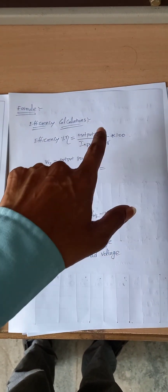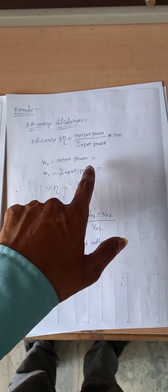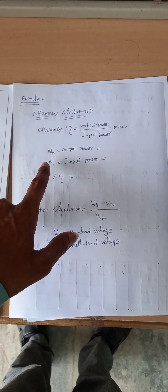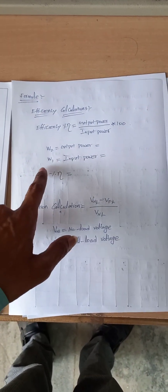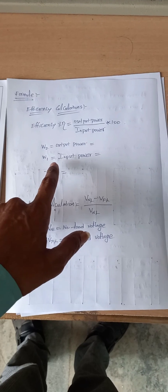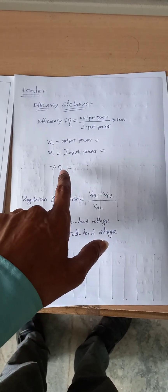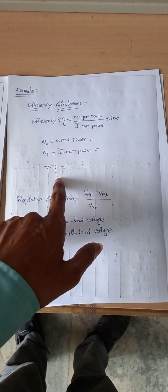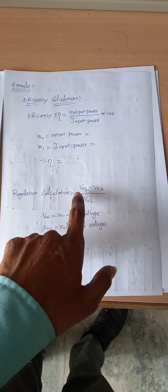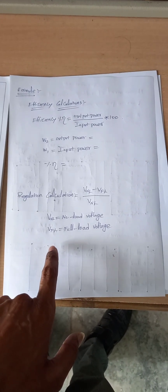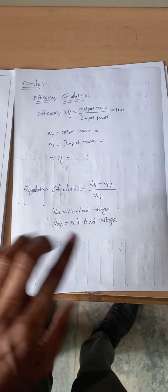Efficiency is equal to output power divided by input power, into 100. W2 watt meter power is the output power and W1 watt meter power is the input power. After taking the readings we will calculate efficiency, and regulation is equal to no load voltage minus full load voltage, divided by no load voltage.